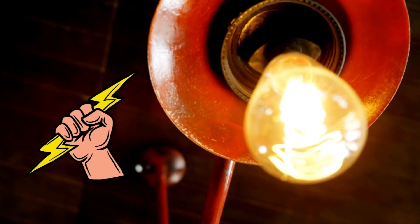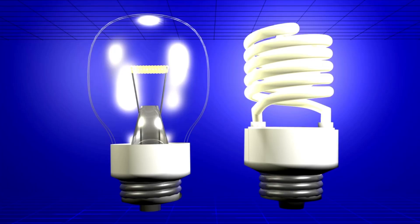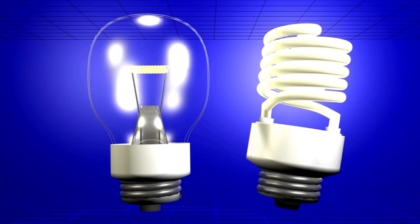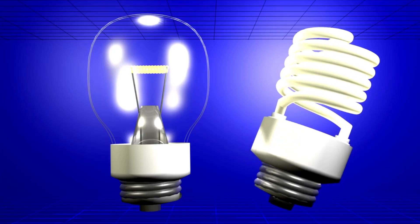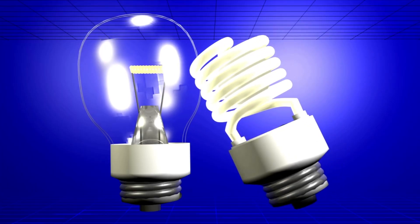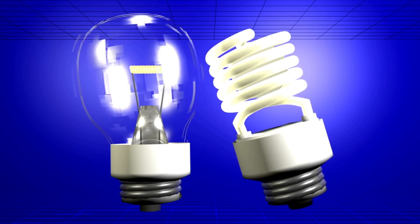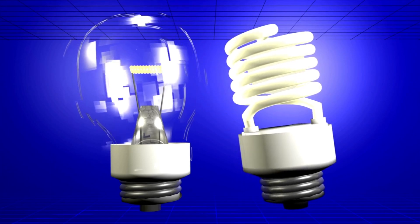The amount is usually written on the side of the light bulb, for example, 20 watts, 40 watts and so on.